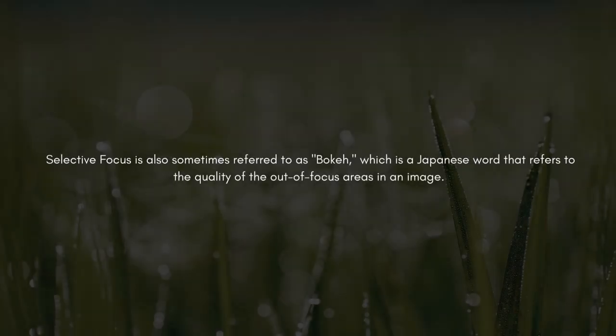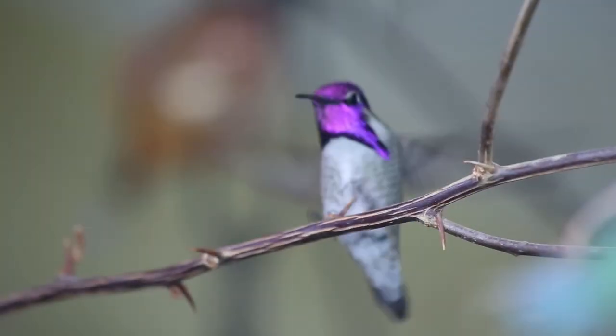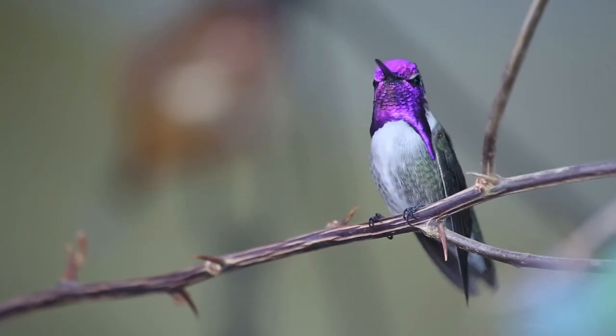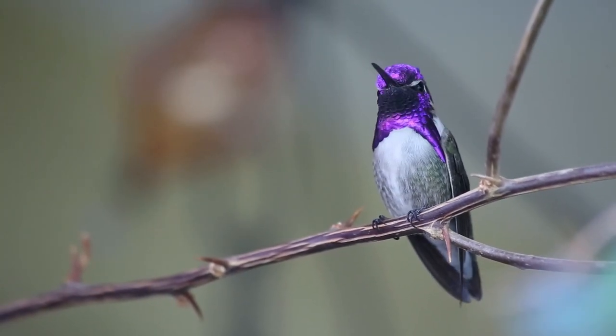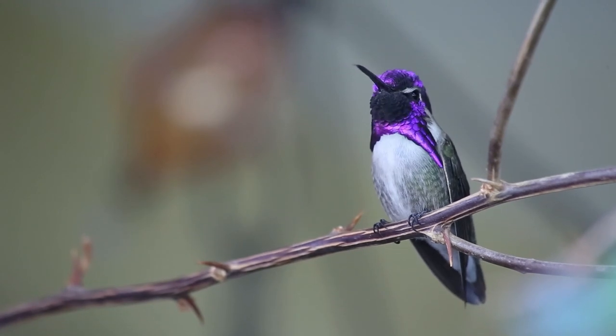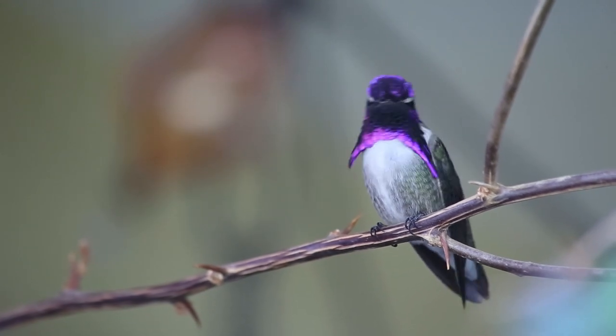Selective focus is also sometimes referred to as bokeh — a Japanese word that refers to the quality of the out-of-focus areas in an image, which was discussed in detail in our previous video on exposure. In conclusion, focus and focal length are two important concepts in photography that determine the sharpness of an image, the angle of view, and perspective.